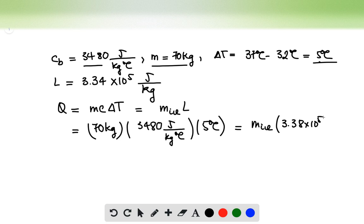We divide both sides by the latent heat of water to find that the mass of the ice equals 70 times 3480 times 5 divided by the latent heat.